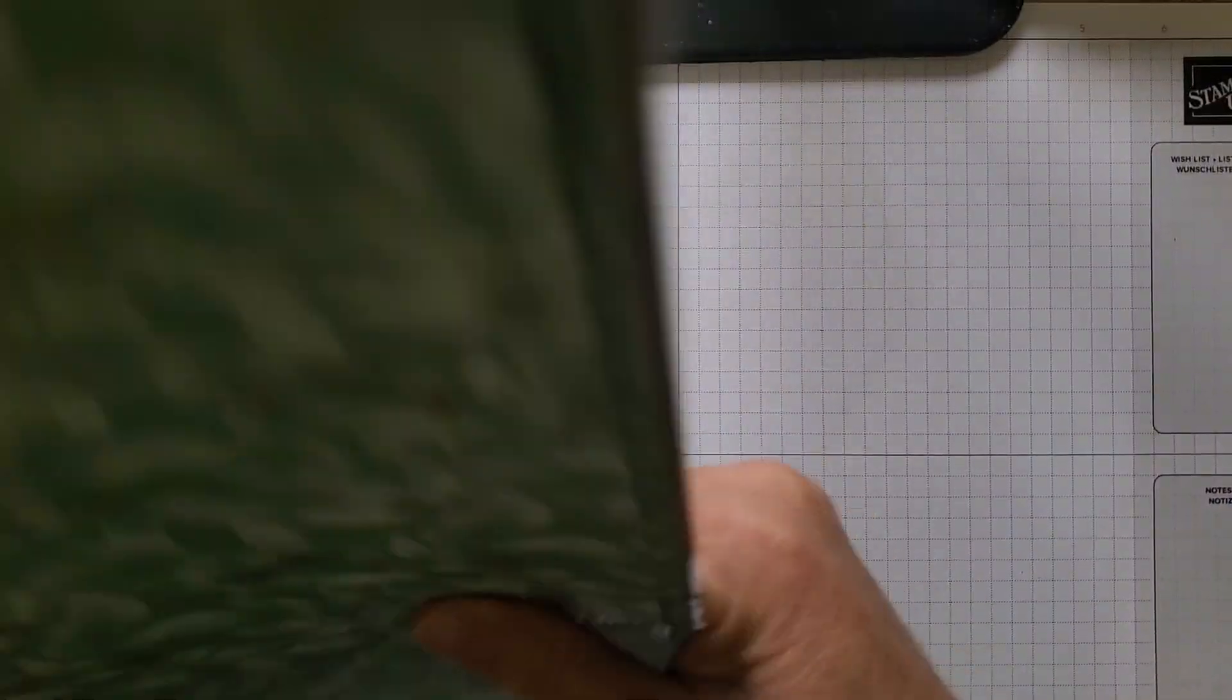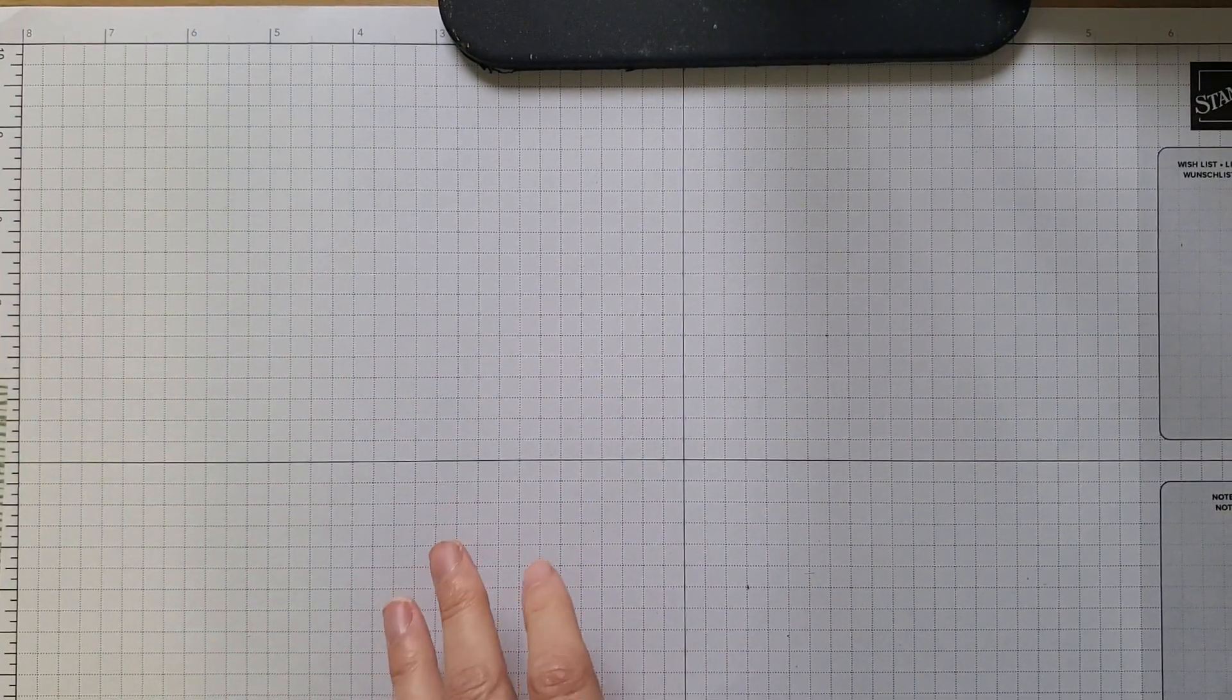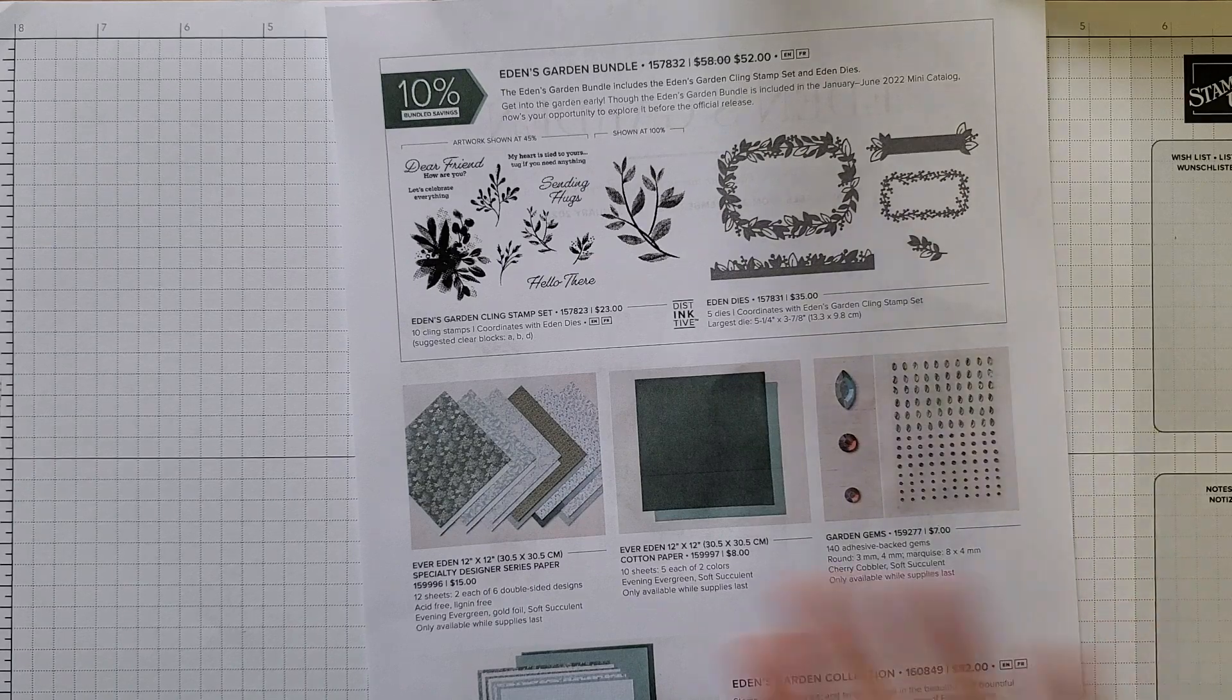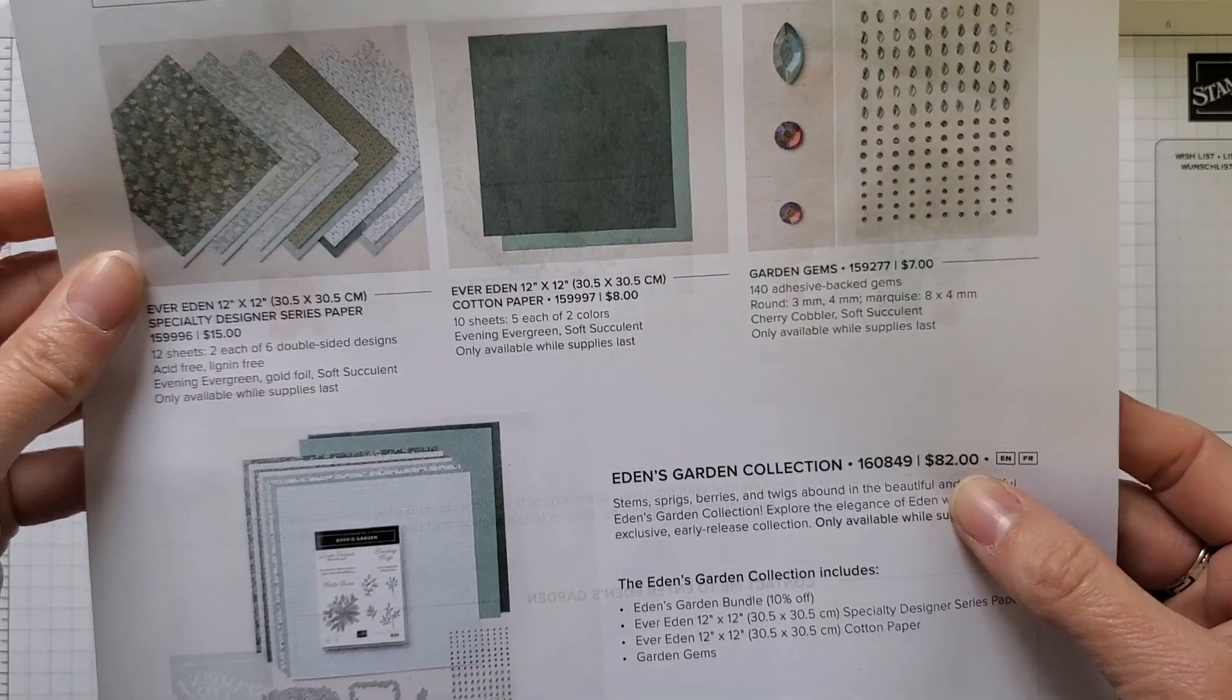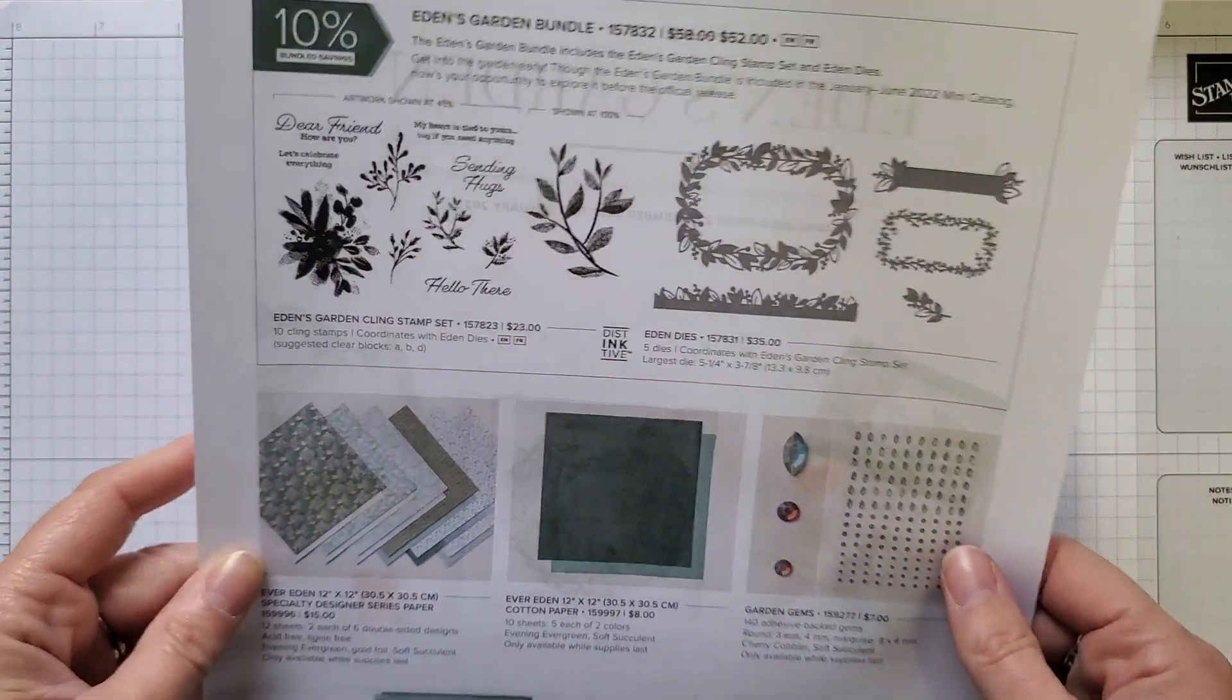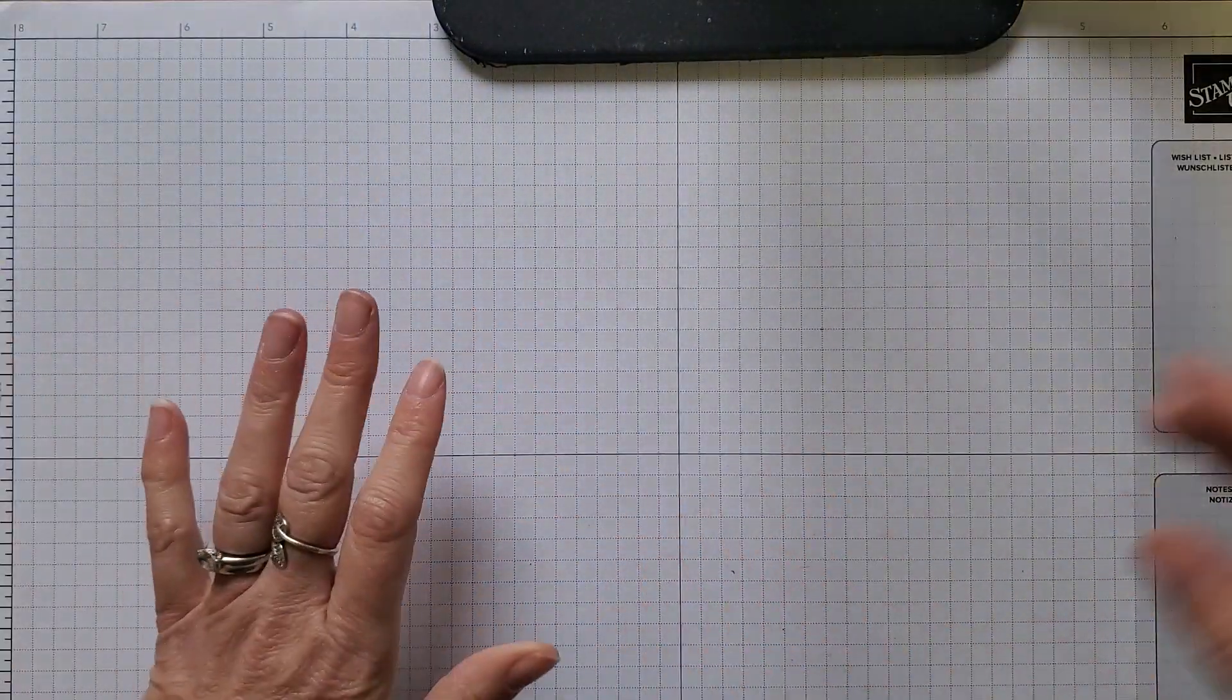So that, like I said, is available only for the month of November. So the pattern paper, the cotton paper, and the gems are only available this month. It's exclusive. You can do the whole collection. It's $82 for everything I just showed you. Like I said, the stamp set and the dies will be available moving forward in January. But the rest of this is not.